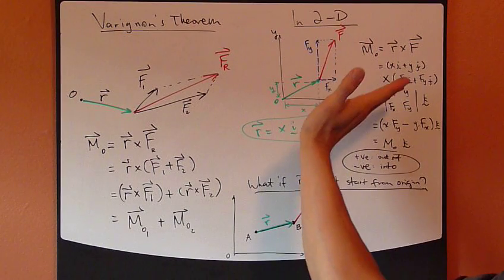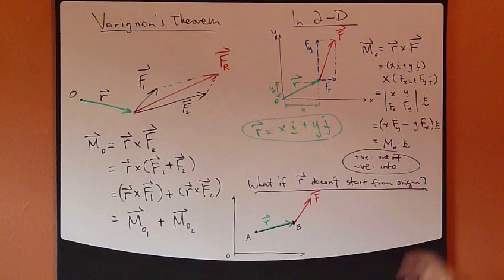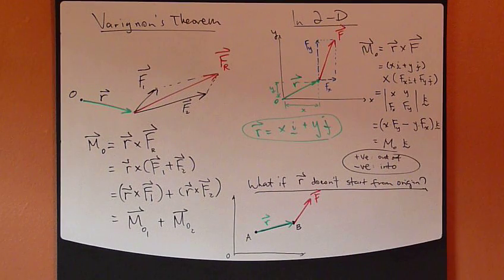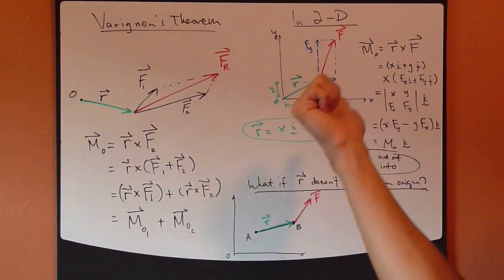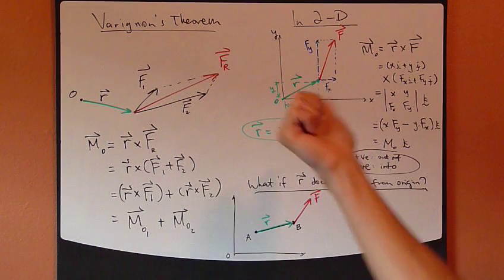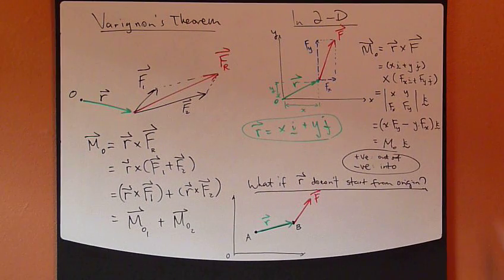Right-hand rule. X cross it with Y gives you Z. So if M-naught is a negative number, then simply opposite direction. So this M-naught is actually going into the board. That's all. So it's pretty easy stuff.